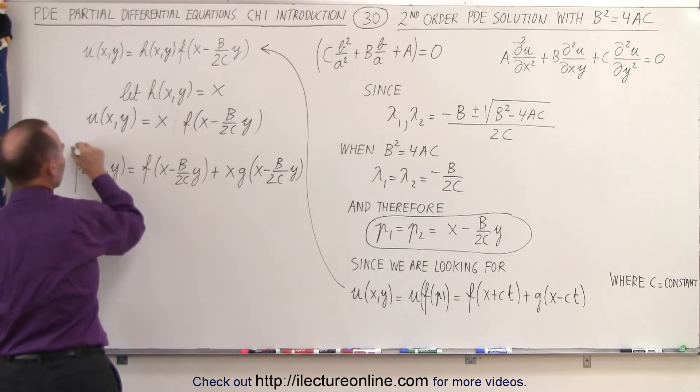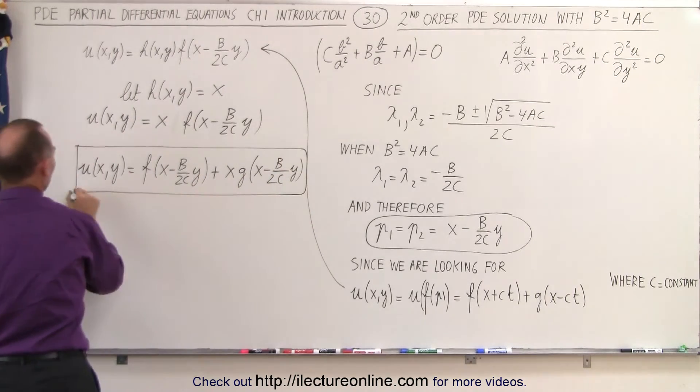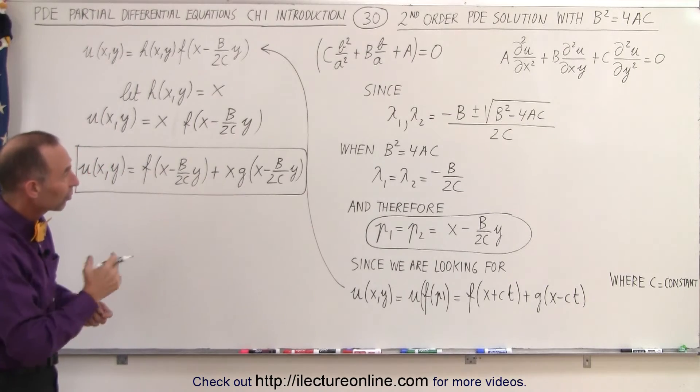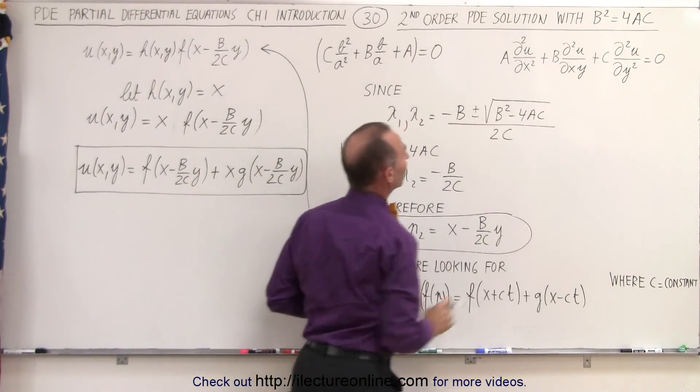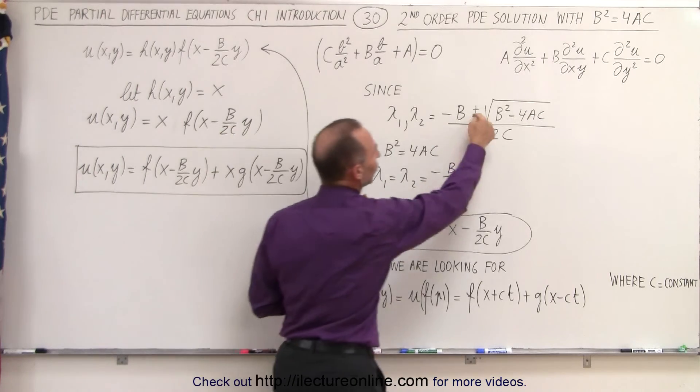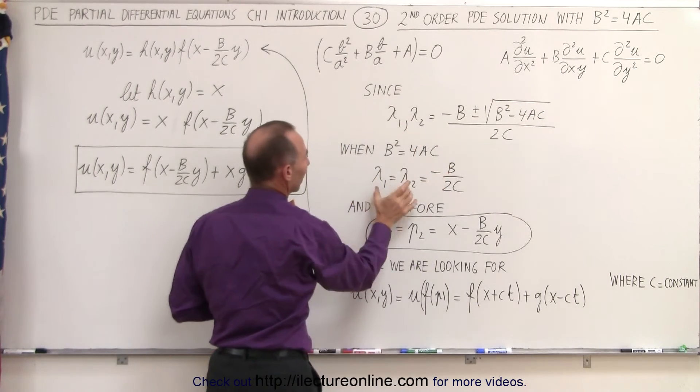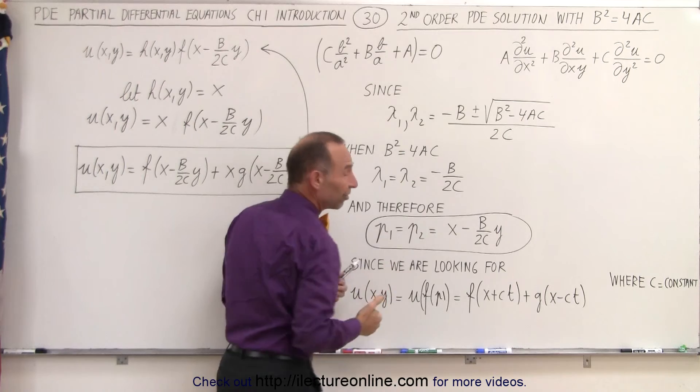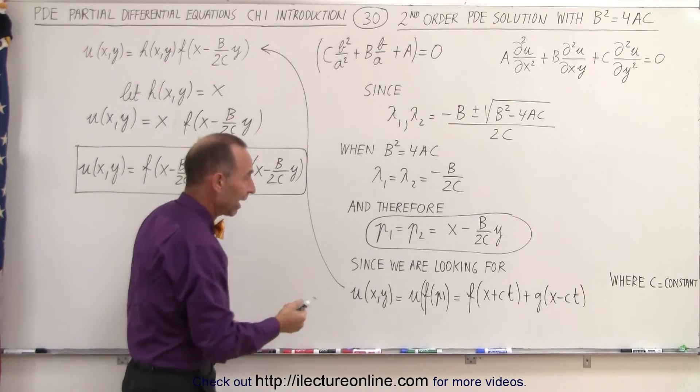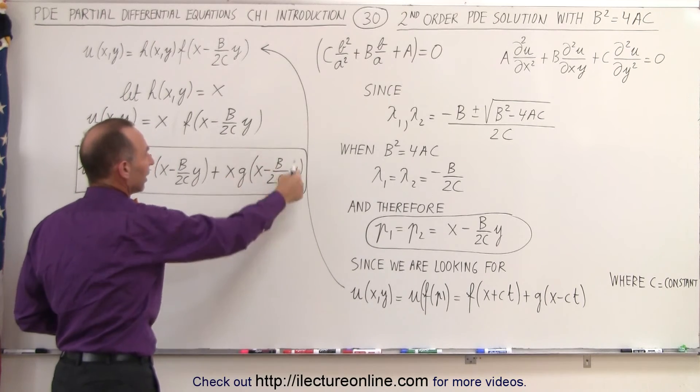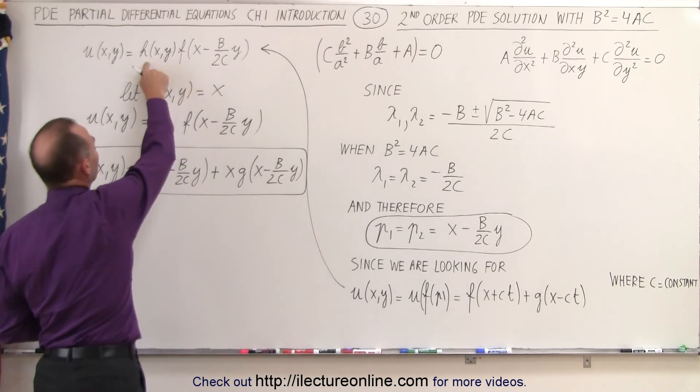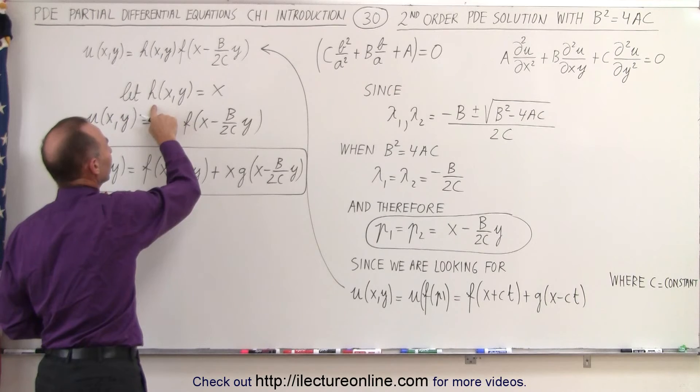This then becomes the new general solution of the second order partial differential equation when we have the condition where b² equals 4ac, which means this term goes to zero. That means we only have one solution like this, which doesn't satisfy what we're looking for—we only have one form of the solution, we need the second form. And that second form will then take on this format, assuming that h is equal to a linear function of x and y. The simplest form of that would be simply saying h equals x.